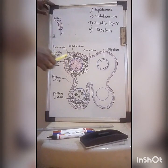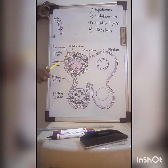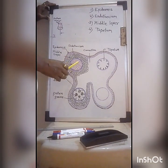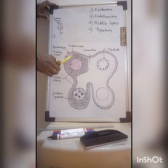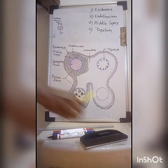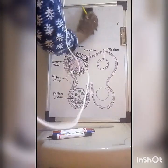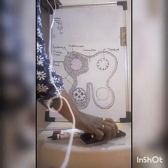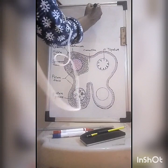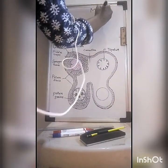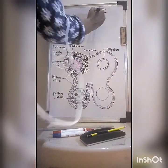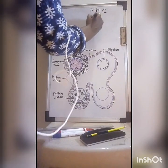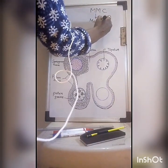Coming to the sporogenous tissue — it is present inside the pollen sac, enclosed by the tapetum layer. This sporogenous tissue functions as microspore mother cells, abbreviated as MMC. These microspore mother cells undergo a cell division called meiosis.